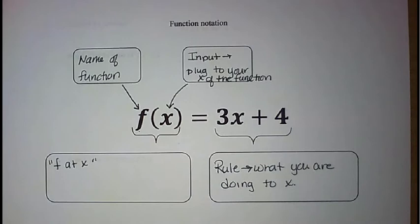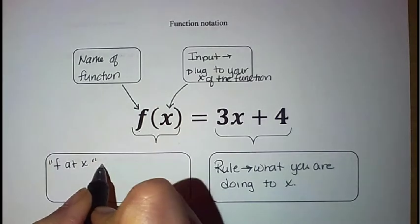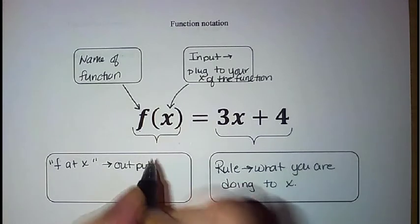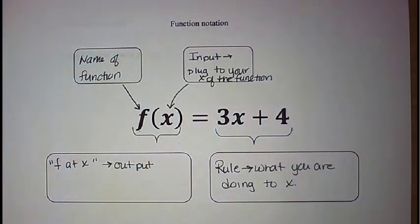Okay, now you might say, what do you mean plug that in? What I'm talking about is down here. You notice that I have F of X. And by the way, that is how that is said. This is F at X. That's how we say that. Okay, this is, and we have it equal to this 3X plus 4. This 3X plus 4 is basically your rule or what you are doing to X. Okay, and then F at X, this is your output. Okay, this is what is your function doing? What answer did you get when you plugged in whatever number we plugged in for X?